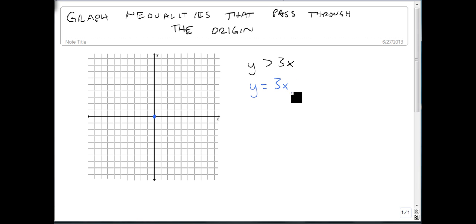So it's going to start at 0, and we follow our slope. Up 3 over 1, up 3 over 1, up 3 over 1. Go down the same way so we can get our points in.